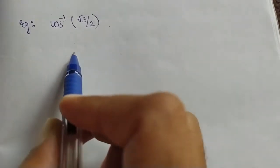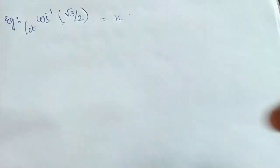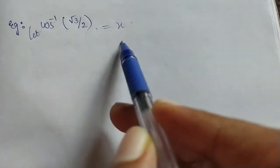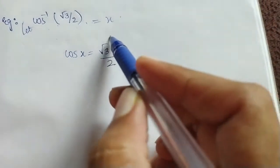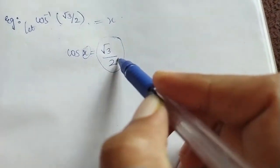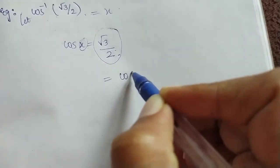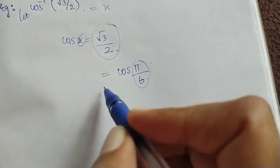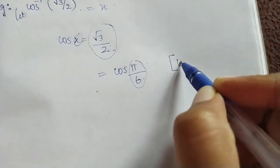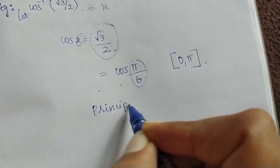Let's do an example. Find the principal value of cos inverse of √3/2. Let cos inverse of √3/2 = x, so cos x = √3/2. We know that cos(π/6) = √3/2. Since π/6 belongs to the closed interval [0, π], the principal value is π/6.